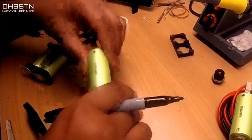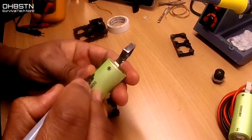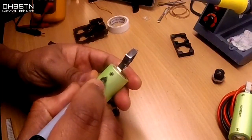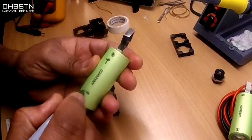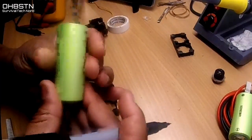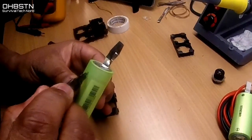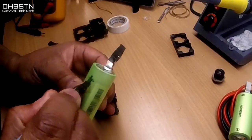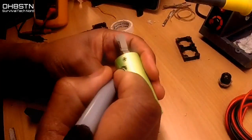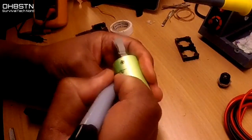Another thing I'd like you to do is mark each cell plus minus plus minus according to the polarity of the cell. You'll understand the importance of this later on. I like to mark them twice so that I can make sure to see them no matter how they're positioned in the cradles. Just go ahead and mark all of your cells.